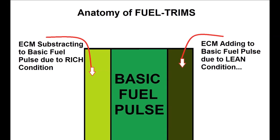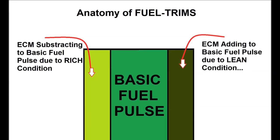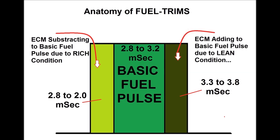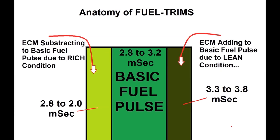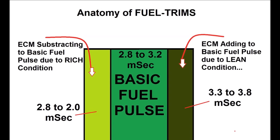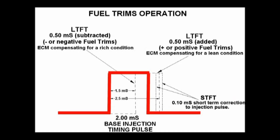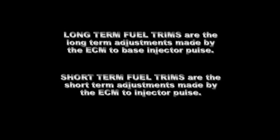It's important to understand the deviation shown here — a minimum of around 2.0 and a maximum of 3.8 milliseconds. Depending on what's pre-programmed into the ECM, it can go above or below that. This stuff is not published anywhere; you have to find it out for yourself as you get deeper into the intricacies of automotive diagnostics.